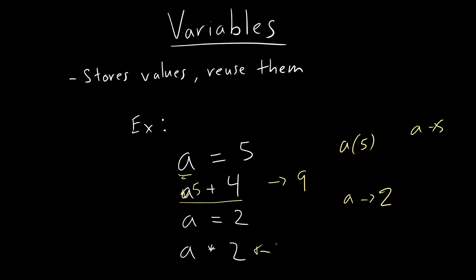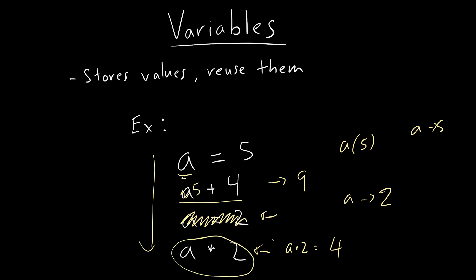If we read this sequentially, sequences matter. So 'a times 2' — what would it be? It's four. Now, what would happen if the line assigning a to two did not exist? If we execute these lines sequentially without it, then 'a times 2' would evaluate to 10, because a would still be five, and five times two equals ten. So these are variables.